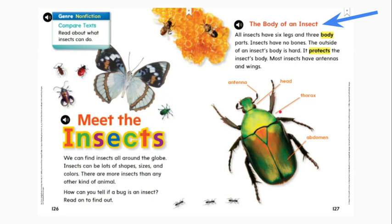Today you'll be reading a story called Meet the Insects. That's the title of the story. I notice a heading on page 127. The heading says the body of an insect. After reading that heading, I can start to think about what this section is going to talk about. It's going to tell me about an insect's body. By using the heading, I already know what information I will learn here.